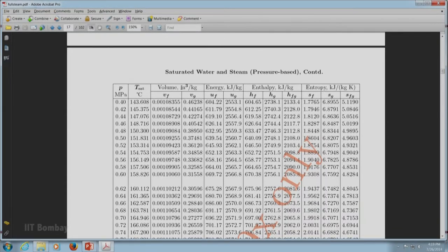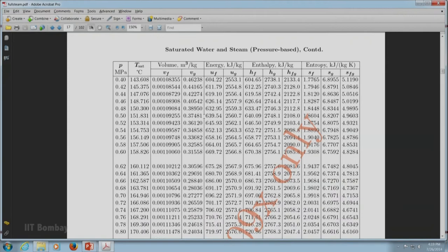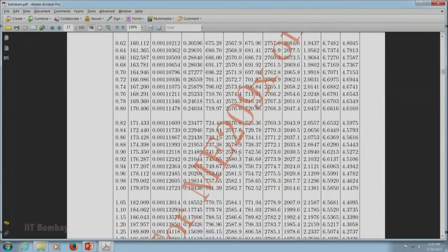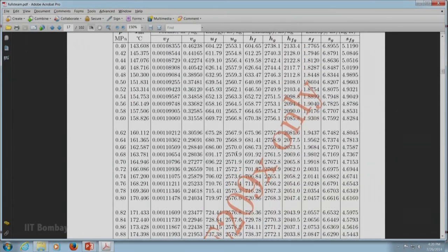10 bar is 1 MPa, this is the table, on this table this is 1 MPa. At 1 MPa write down all the values first. What has been given is x = 0.6. We will require both the parameter HF and HG, SF and SG, UF and UG as given over here.